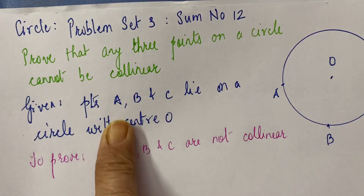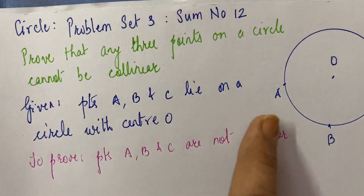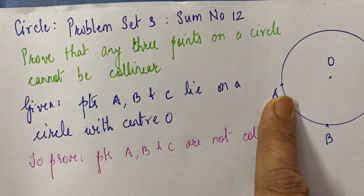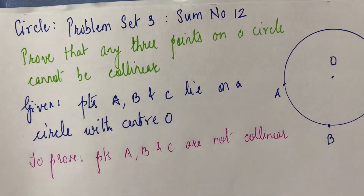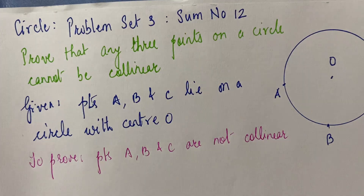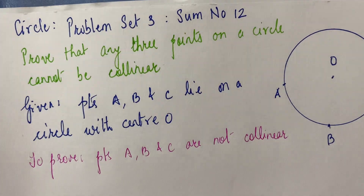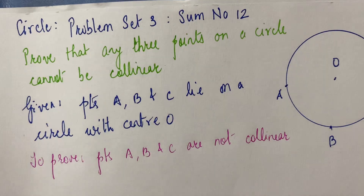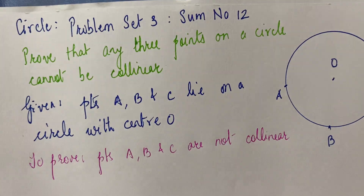We have to prove that any three points on a circle cannot be collinear. Cannot be collinear means they cannot be on the same line — they have to be non-collinear.